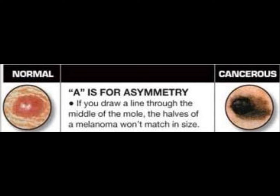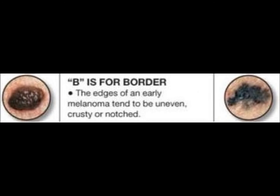A is for asymmetry — bad moles are often asymmetric. If you cut the mole in half, one side does not look the same as the other side. B is for border — bad moles often have an irregular or jagged border.